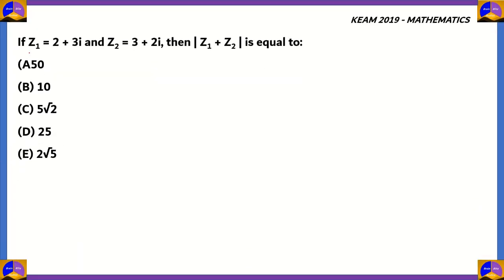The next question: If z1 equals 2 plus 3i and z2 equals 3 plus 2i, then mod of z1 plus z2 is equal to 50, 10, 5 root 2, 25, or 2 root 5.